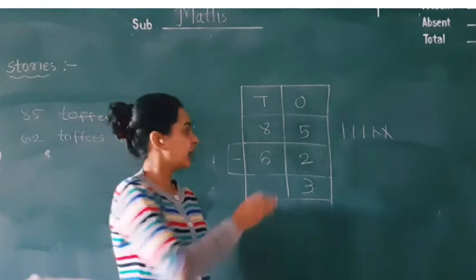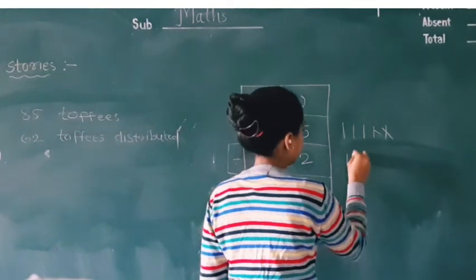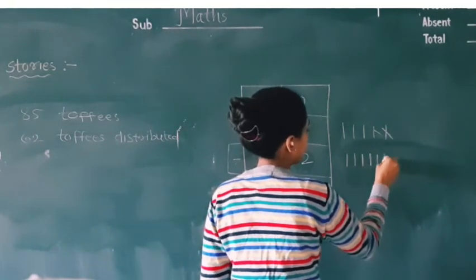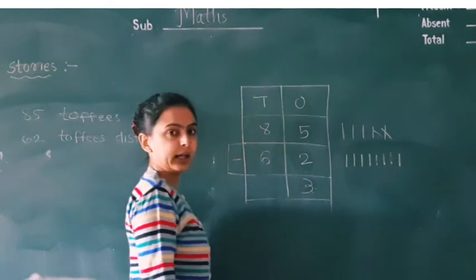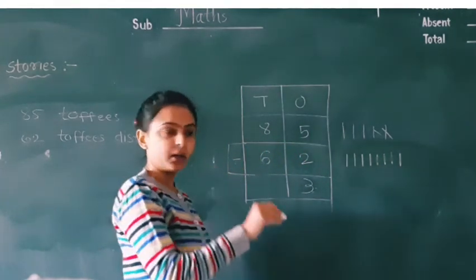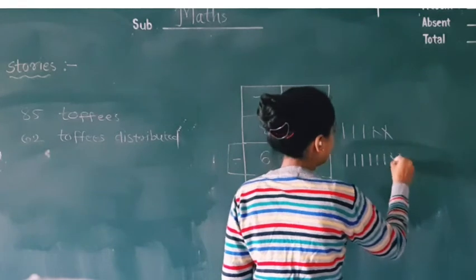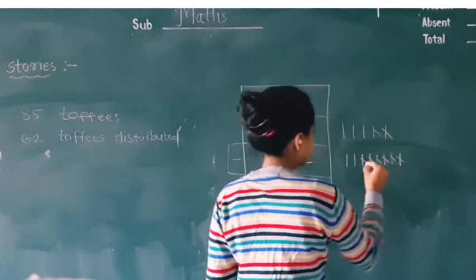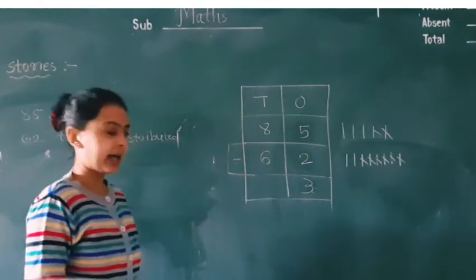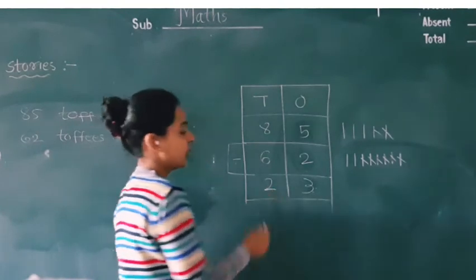Now subtract tens. 10s ko subtract karenge. 1, 2, 3, 4, 5, 6, 7, 8. Now 8 minus 6, cut and cancel: 1, 2, 3, 4, 5, 6. Remaining lines will be 2.